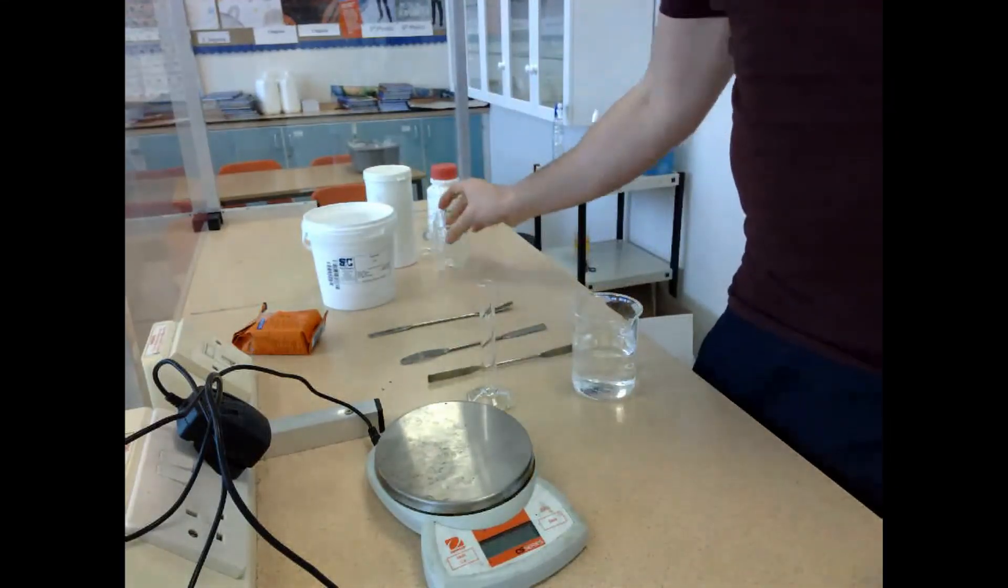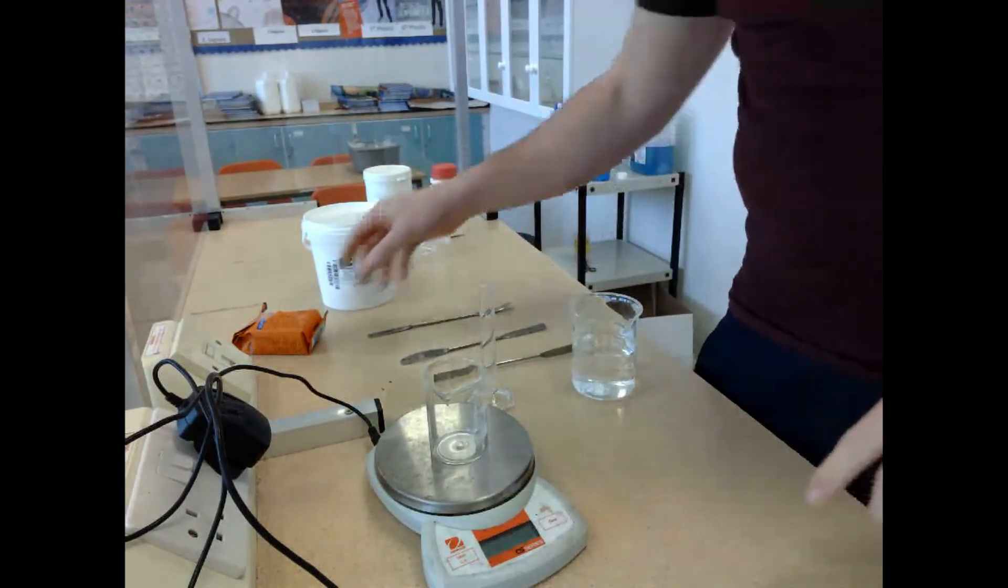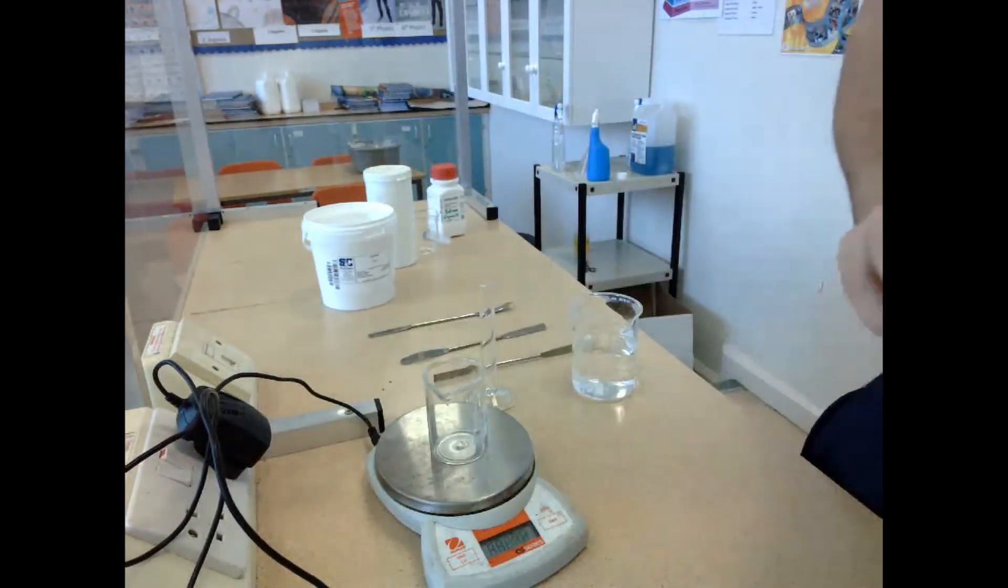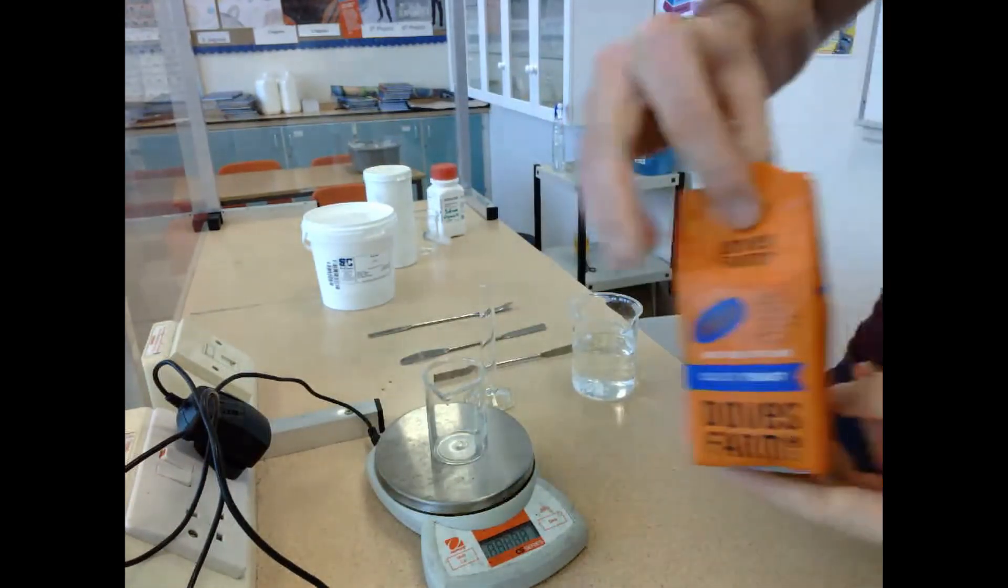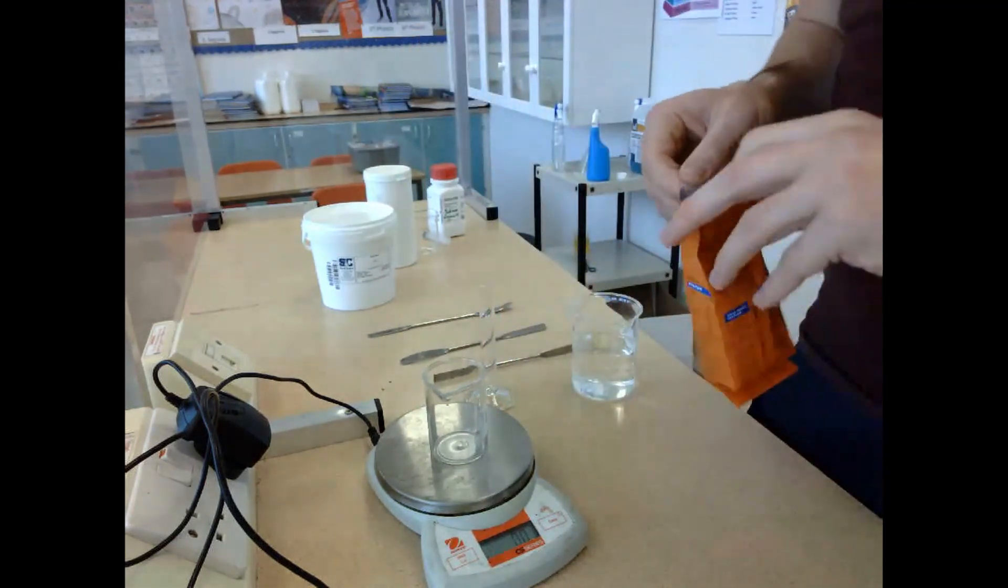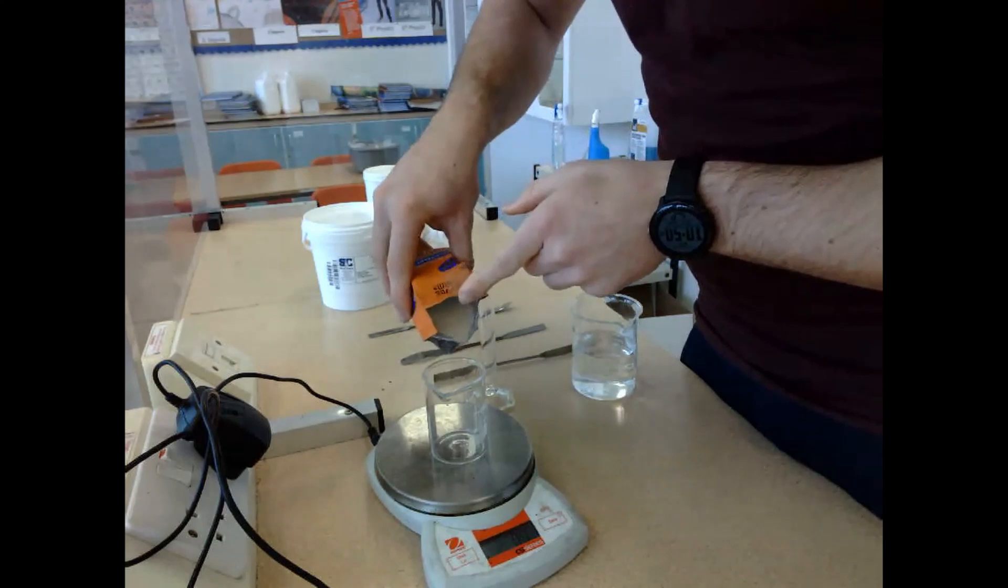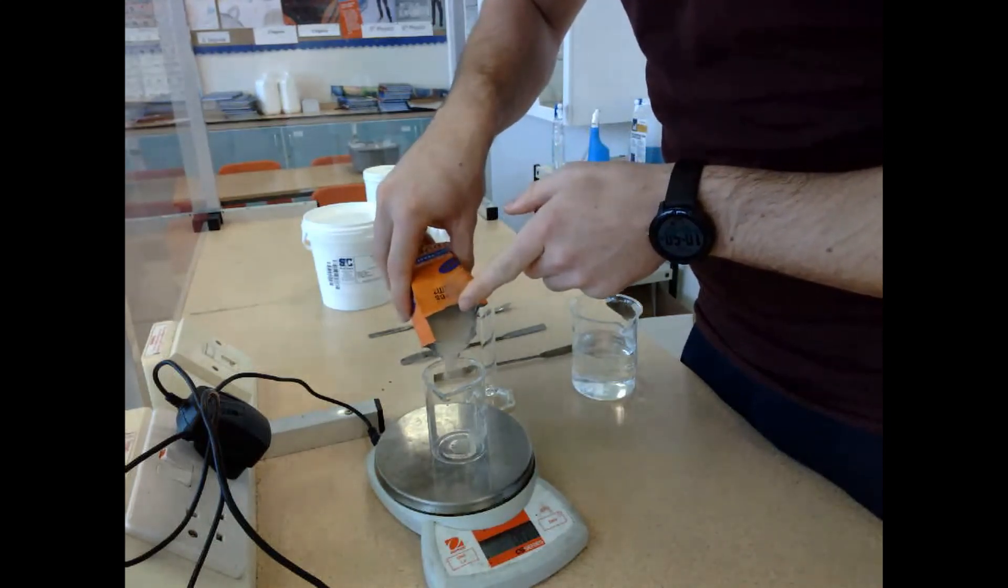This experiment is a two-part experiment looking at the preparation and application of an immobilized enzyme. The enzyme we're going to use is yeast—obviously yeast is an individual cell, but it acts as an enzyme in this experiment. An immobilized enzyme is one that has been attached to an inert material.